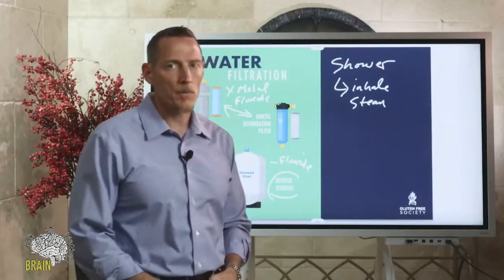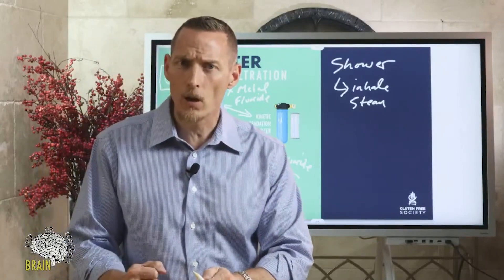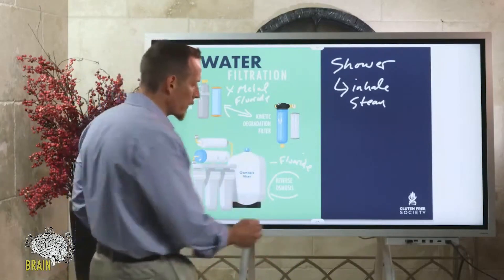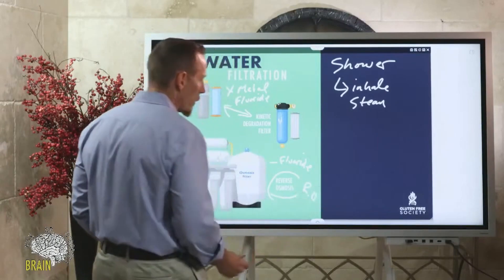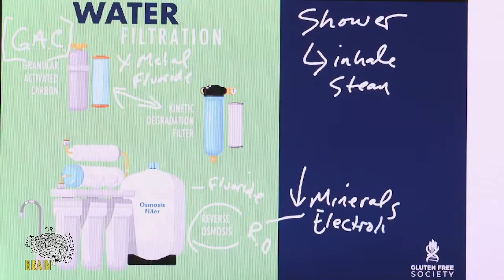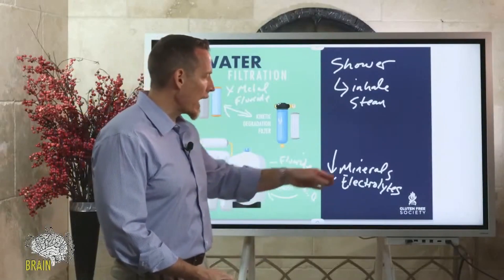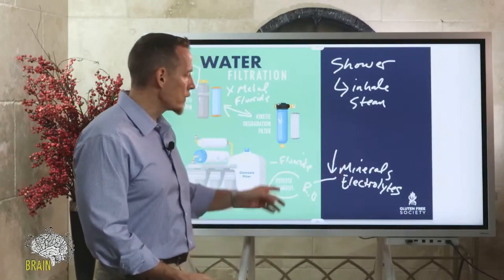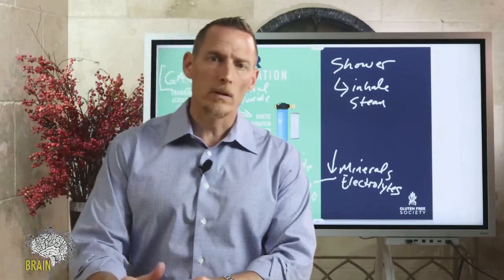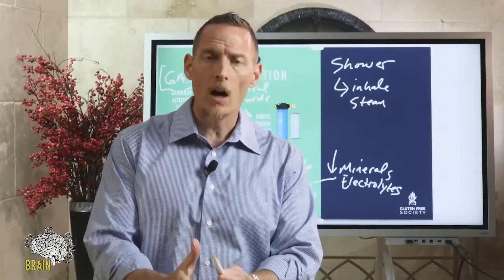If you're using RO — reverse osmosis — one issue is that it pulls minerals out of your water, and many of those minerals are electrolytes. Potassium, chloride, sodium, magnesium, and calcium are all part of the electrolyte family. When you pull those out, you want to add them back in. If you're using RO water, it's good to have an electrolyte supplement. One of my favorites is Ultra Electrolytes — I use it in my office where I have an RO filter.